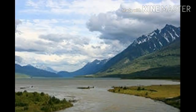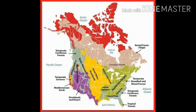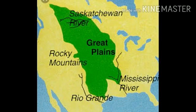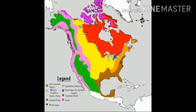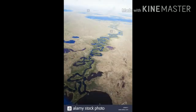North America has quite a long and indented coastline, except in the south where there is the Isthmus of Panama. The coastal plain is narrow in the northeast and widens towards the south and west.